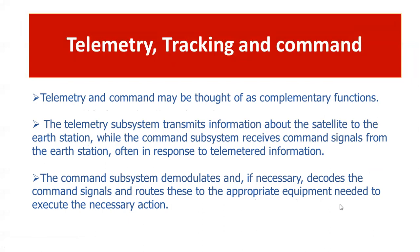The telemetry subsystem transmits information about the satellite to the earth station, while the command subsystem receives command signals from the earth station. The processed tracking data is then uploaded to the satellite through the transmitting antenna. The command subsystem demodulates and, if necessary, decodes the encrypted command signal and routes it to the appropriate equipment needed to execute the necessary action — such as changing direction or compensating for high pressure levels.